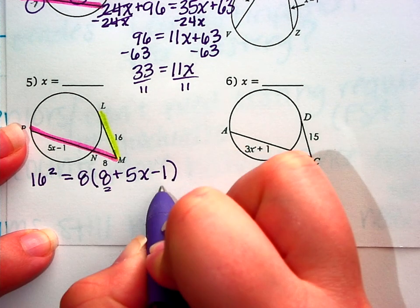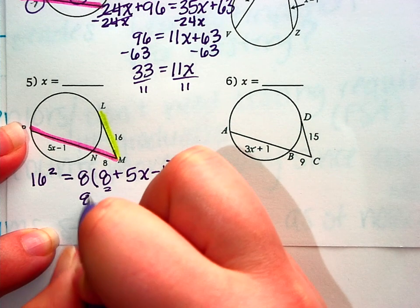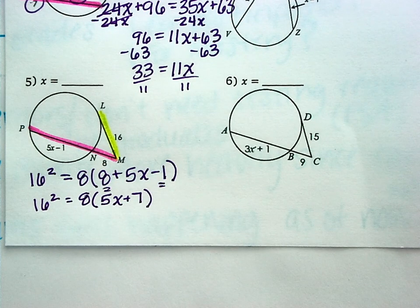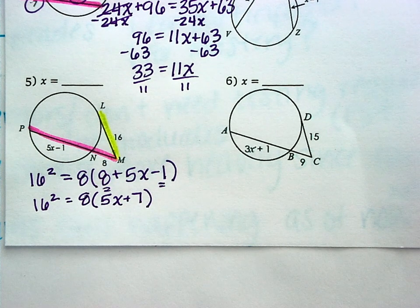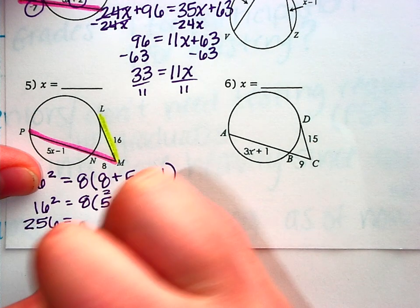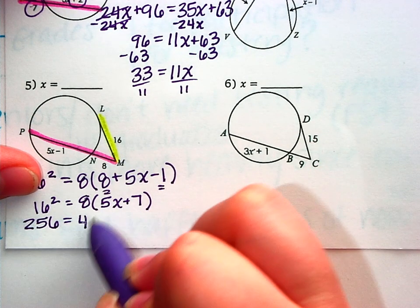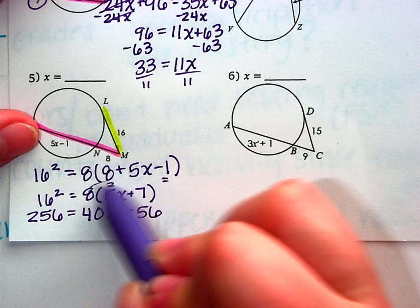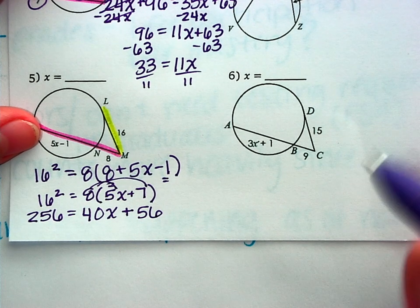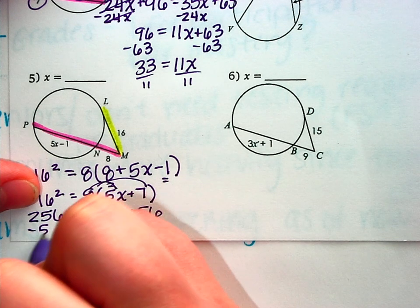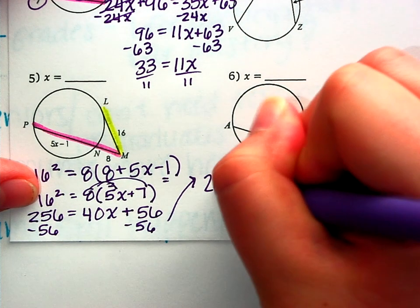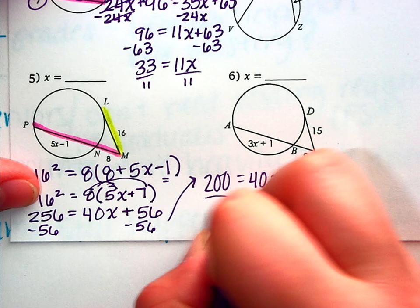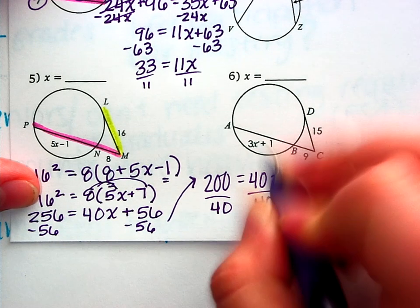So combine these like terms, 8 minus 1 is 7. So this is really 8 times 5x plus 7. So let's figure out what 16 squared is. 256 equals distribute 40x plus 56. That's distributing the 8. Minus 56, I'll have 200 equals 40x. 200 divided by 40 gives us x is 5.